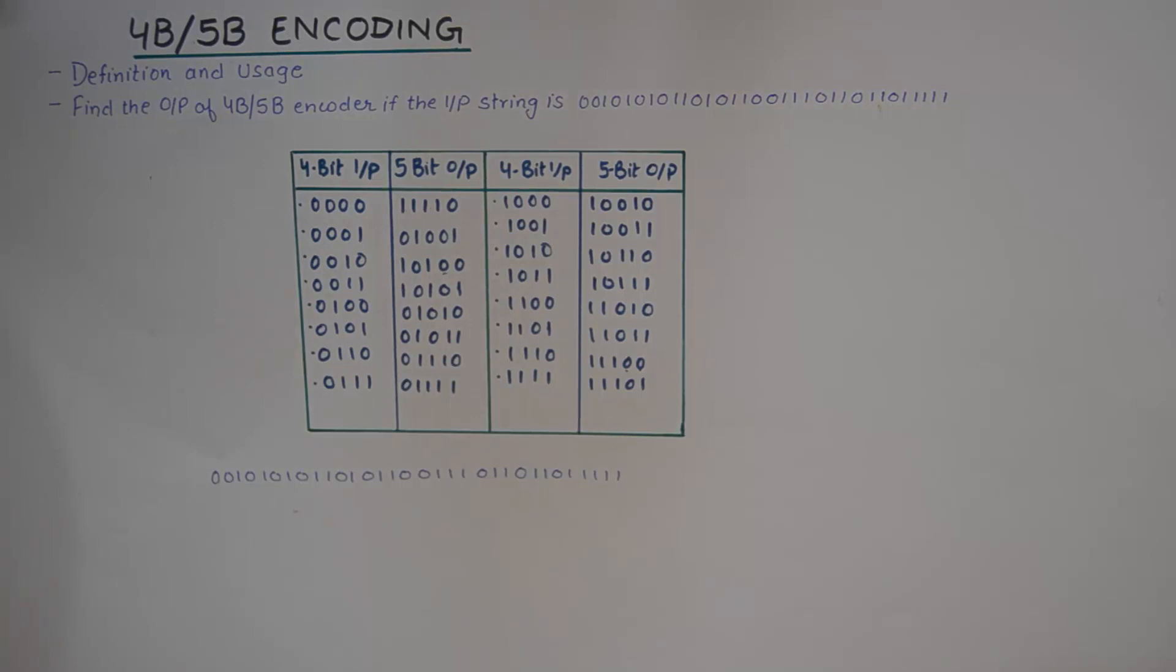The basic definition of a 4B5B encoding would be to encode a 4-bit input into a 5-bit output which eliminates the long strings of zeros, some of them which are appearing in the 4-bit input code.